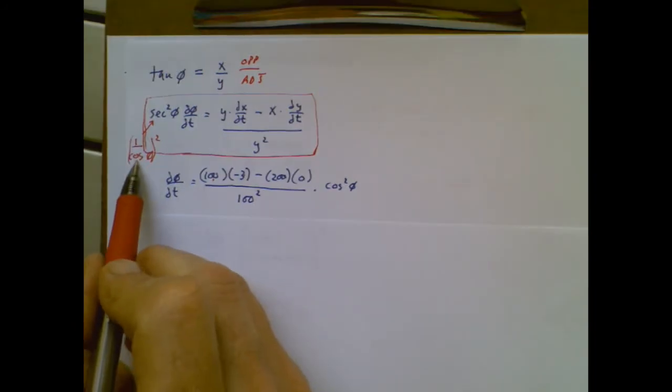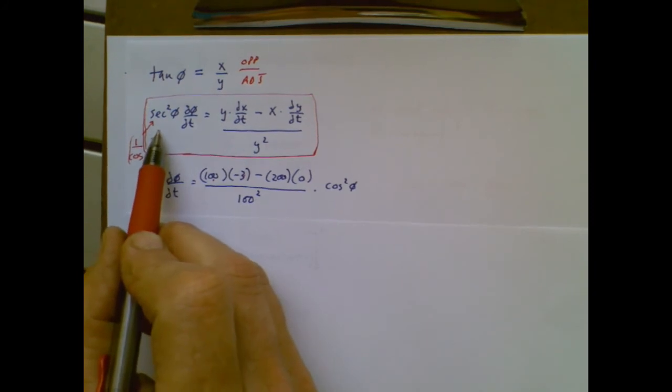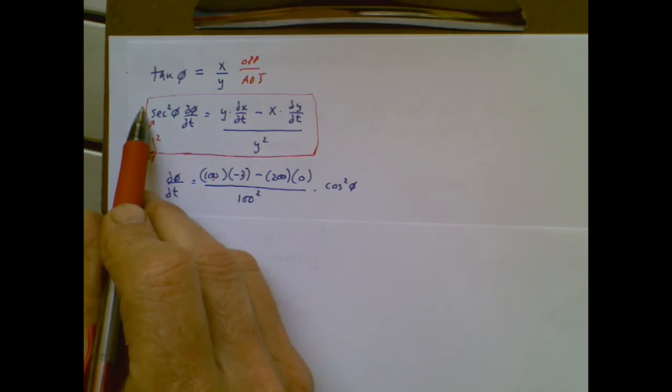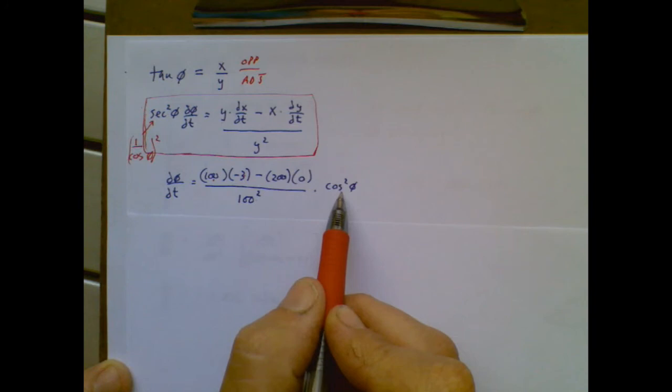But what this is saying is I have a cosine squared theta in a denominator over here. So to get rid of something in the denominator, I multiply it as a numerator. And then I have to do the same thing to the other side. That's how that cosine got there.